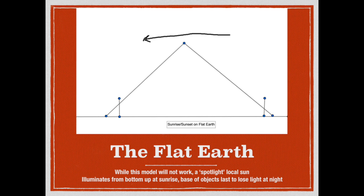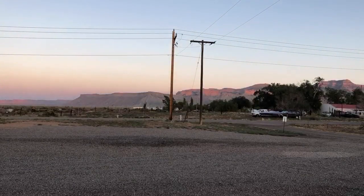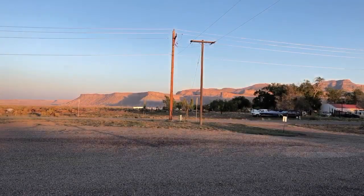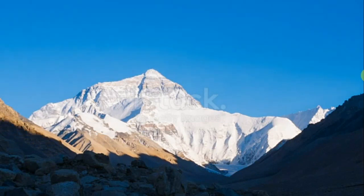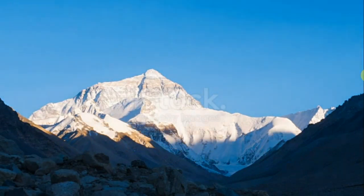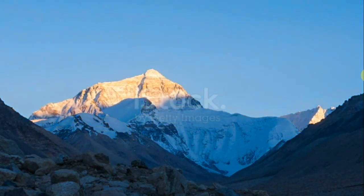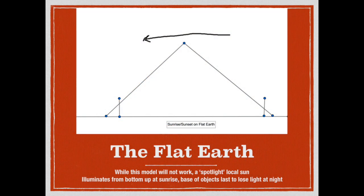Let's take a moment and look at both a sunrise in Utah and a sunset at Mount Everest and watch how the light moves. Here's a sunrise facing west — pay attention to the top of the mesa and the ground in front of the camera. And here's a sunset facing east at Mount Everest — pay careful attention to the shadows and the pattern of light. So once again looking at the Flat Earth spotlight Sun: at sunrise, the bottom of objects would get the light first. Yet in our video from the Utah desert, the mesa itself lit up first and the bottom lit up last.